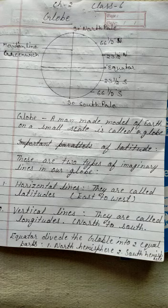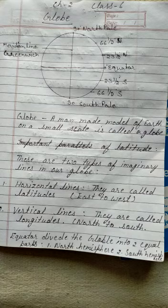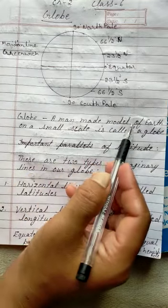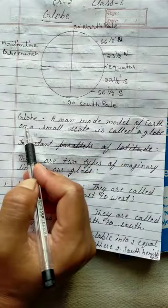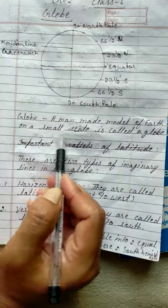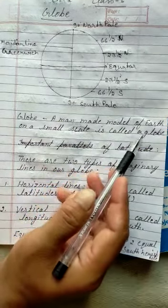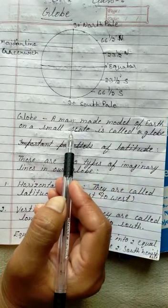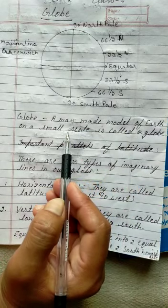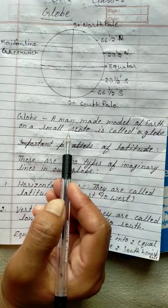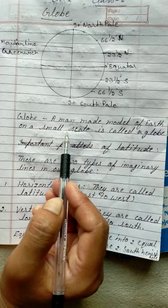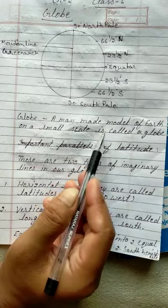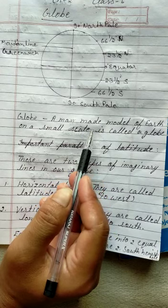What is a globe? I explain you about globe. Globe, a man-made model of earth on a small scale is called a globe. मानव द्वारा बनाया हुआ प्रित्वी का एक छोटे scale पे बनाया हुआ प्रित्वी का एक परती रूप, model का मतलब होता है परती रूप, उसको क्या कहते हैं? Globe.